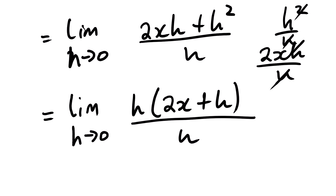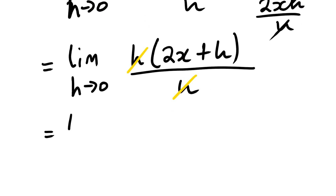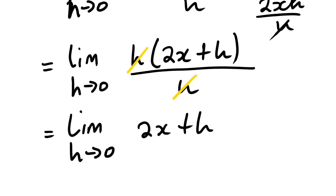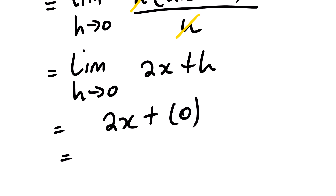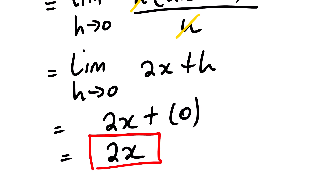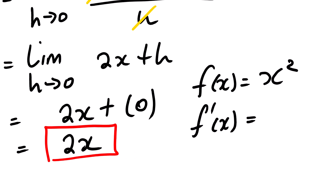The h in the numerator and denominator cancel. We are left with the limit as h approaches 0 of 2x plus h. Now we substitute h equals 0 directly: 2x plus 0 equals 2x. So the derivative of x squared is 2x. We can verify this using the power rule.